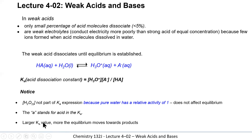The larger the Ka value, the more the equilibrium shifts to the products. If I start with 100 HA molecules and the Ka gets larger, more and more of them actually ionize. You can tell the relative strength of a weak acid by looking at its Ka value: the larger the Ka, the more it ionizes, and the lower the pH.